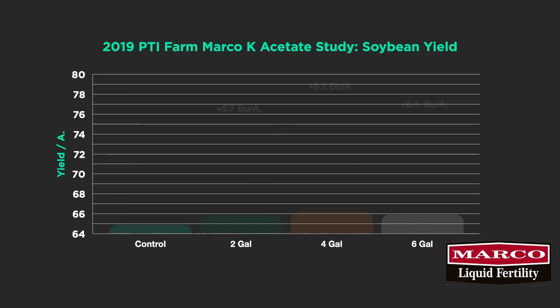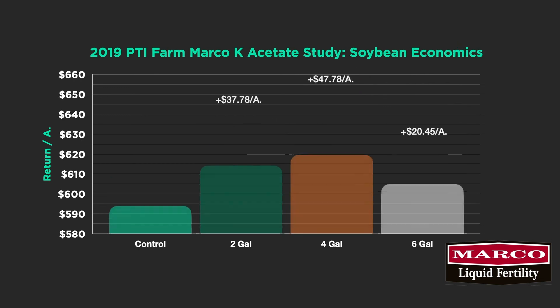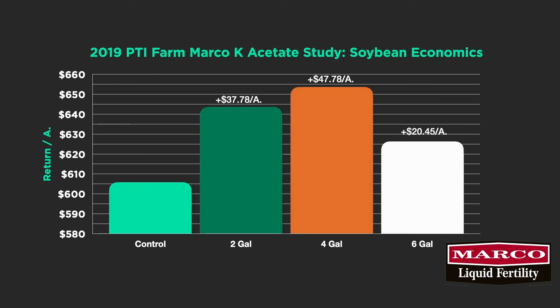We're also looking at other products, including a regular potassium acetate from Marco Fertilizer out of Clinton, Illinois — a company we've worked with for a long time. It's a clear product that applies very nicely. Running this at two, four, and six gallons per acre on soybeans, we're seeing up to eight bushel increases, with some results approaching $45 to $50 per acre net profit. Definitely seeing some strong response from potassium.